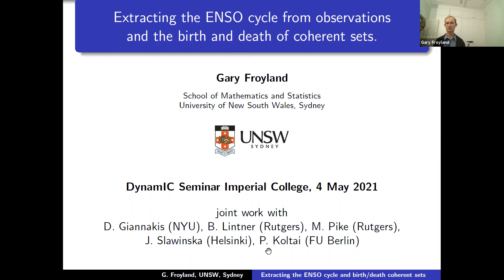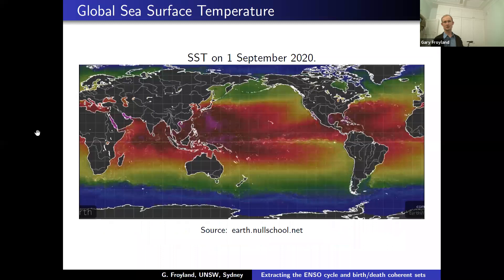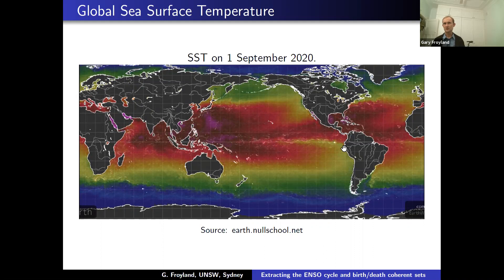Starting with the ENSO material: this is an image of sea surface temperature — absolute sea surface temperature. You can see the equatorial correlation, with warm water near the equator and cooler water near the poles, but there are some deviations. For example, off Peru there is a yellow, cooler tongue of water that's associated with La Niña.